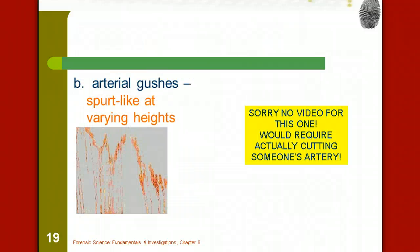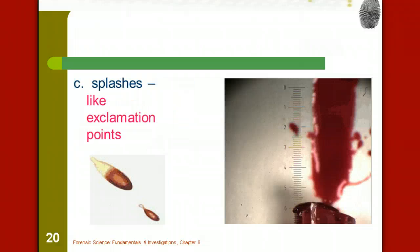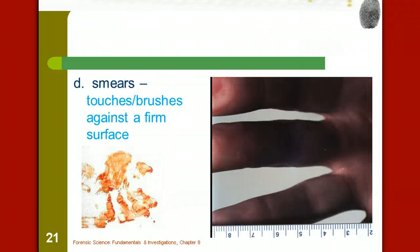Then there are what we call arterial gushes. An artery's been hit, and because of the heart still pumping, it is causing the blood to spray out at different pressures. A lot of times we can see that along a wall in varying heights. There are also what is called splashes. Those splashes tend to make kind of exclamation points. If somebody coughs or sneezes or chokes, sometimes there are splashes of blood that can come out.